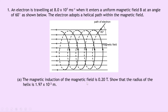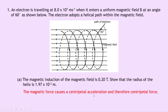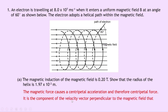Part A says the magnetic induction of the magnetic field is 0.2 tesla. Show that the radius of the helix is 1.97 times 10 to the minus 3 meters. We need to be aware of why we get the circular motion part of the helical motion. The magnetic force causes a centripetal acceleration and centripetal force. It's the component of the velocity vector perpendicular to the magnetic field that gives rise to the circular motion, whereas the component parallel to the field creates the pitch in the helix.